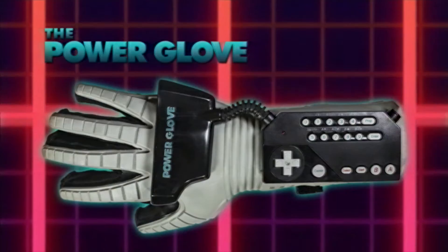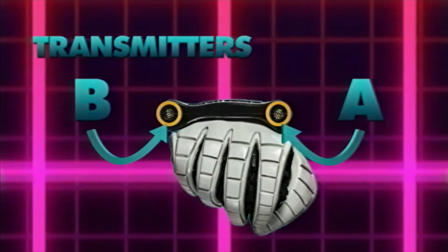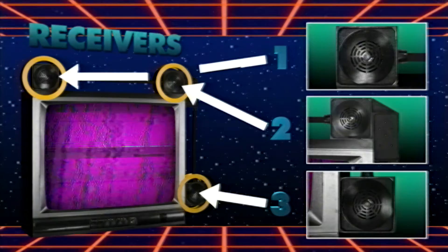On the glove itself we have two transmitters, transmitter A and B. And we have over at the TV set three receivers: receiver one, receiver two, and receiver three.